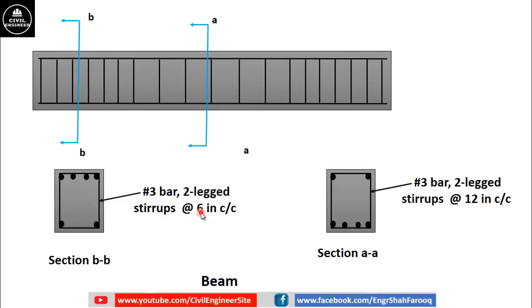Six inches, while stirrups provided at section a-a are number three bar, two-legged stirrups at the rate of 12 inches center to center.